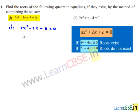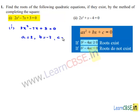On comparing this equation with the standard equation ax² plus bx plus c is equal to 0, we get a is equal to 2, b is equal to minus 7, and c is equal to 3.